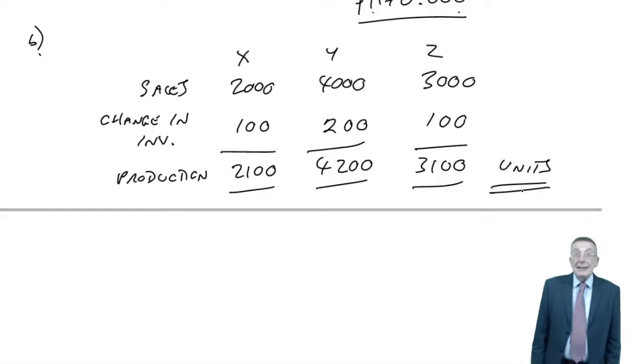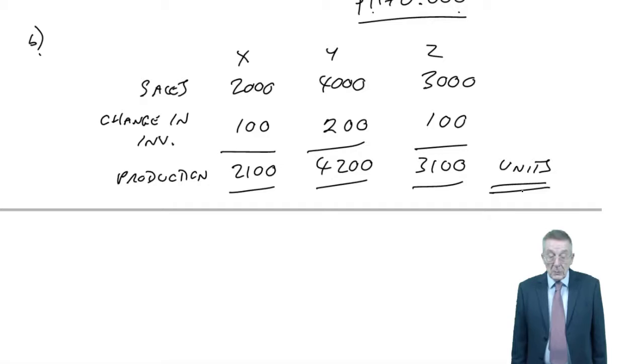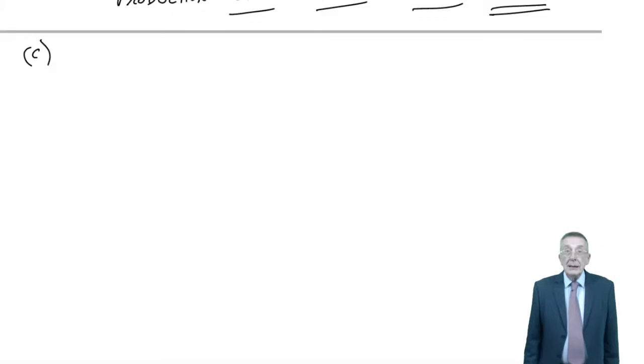I'm not, for the moment, interested in how much it'll cost. My production manager needs to be told how many we want to produce. The production manager isn't directly concerned with the cost at all. Let's move on. C, materials usage budget.